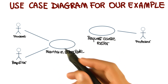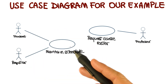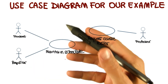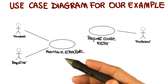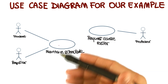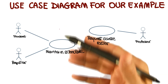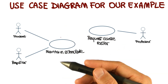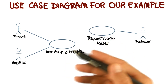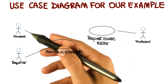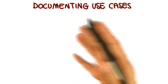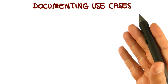At this point, it should be pretty clear that this gives us an idea of the interactions, but we don't really know how these interactions occur. So there is one piece that is missing: how do we document the use cases? How do we describe what happens and what these interactions actually are? And that's exactly what we're going to discuss now — how to document use cases.